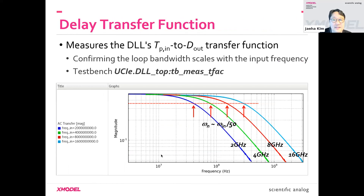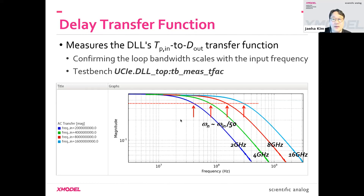This is a similar test bench measuring the AC transfer function — specifically the transfer function between the input clock period and the VCDL delay — using the probe AC primitive. If you look at the result, this is a low-pass filter characteristic, and the bandwidth scales proportionally with the input frequency, which is what we want.